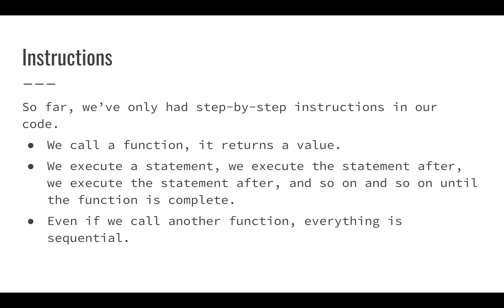Every custom function we've had, everything that we've done so far, it's been an instruction and then an instruction and then an instruction. Basically, we call a function, it returns a value, but there's not really been any branching. Everything just happened in a very sequential manner. We execute one statement, another statement, another statement, and so on until we get to the end of the function. So if we call another function, it's still sequential — we don't really do anything variable within our program.